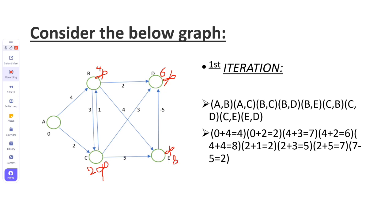We check D: it has no outgoing direction, so we move to E. E has a direction to D with weight minus 5. E is 8, so 8 minus 5 equals 3. Since 3 is less than 6, we update D to 3. This completes the first iteration. We will now proceed to the second iteration.